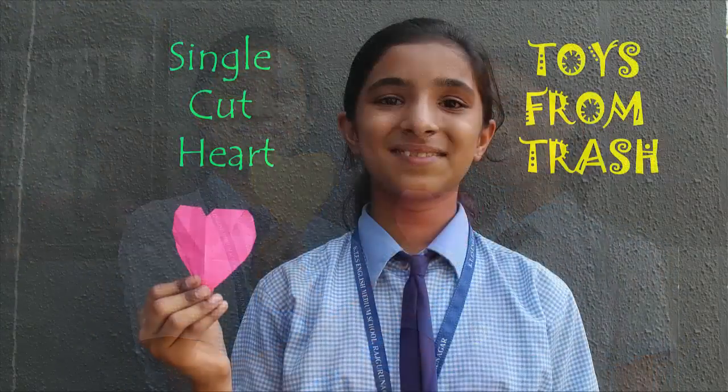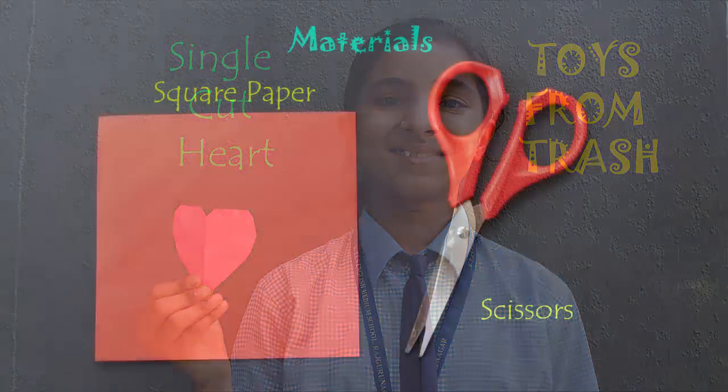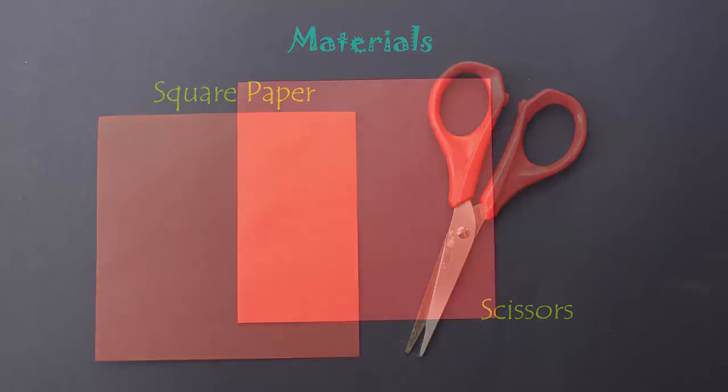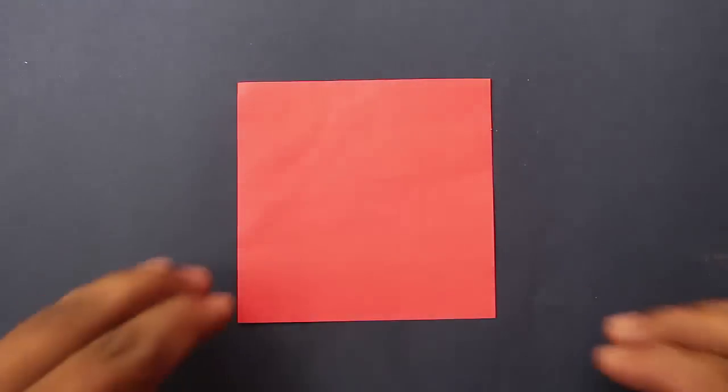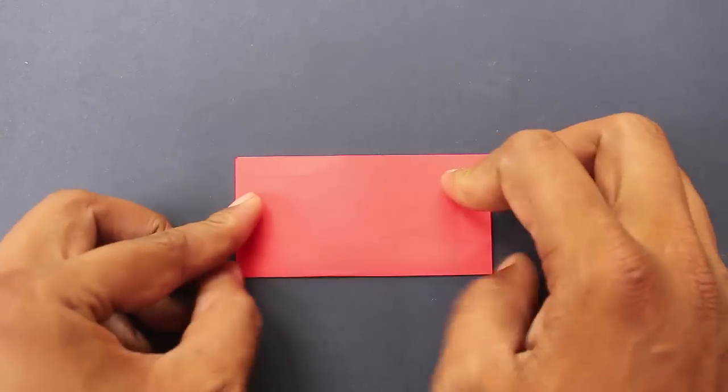Well, to make this heart you just need a square paper and a pair of scissors. First, fold the square in half and then into a quarter.